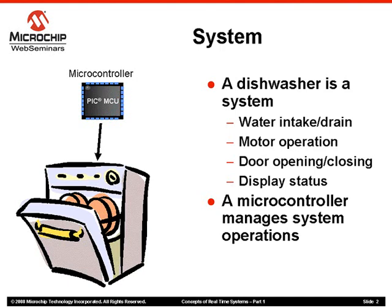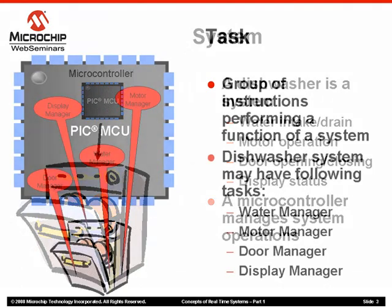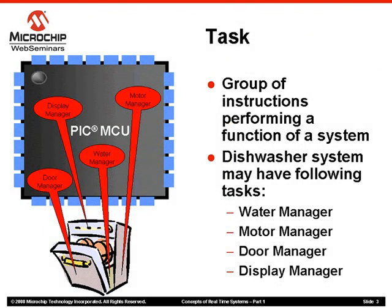An intelligent unit, such as a microcontroller, can manage various functions in a system in some coherent way. For example, a Microchip PIC microcontroller embedded in a dishwasher can manage various functions to fulfill coherent operation of the dishwasher. So, what is a task? A task is a group of instructions that execute on a microcontroller to solve a portion of the problem. This group of instructions performs a function of a system.